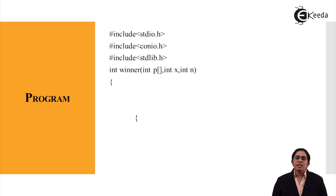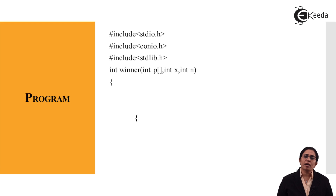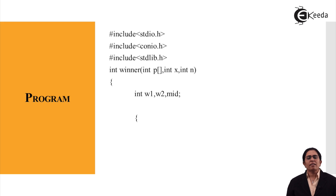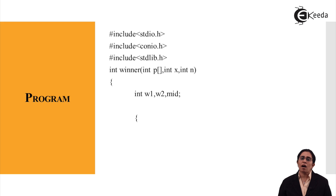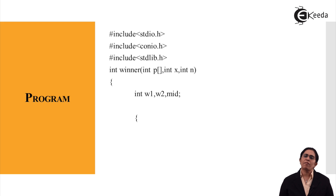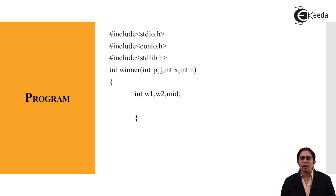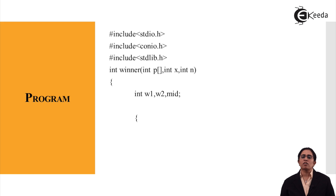The function named 'winner' predicts the winner using the strategy. It takes the array, the integer variable n, and the size on which we are going to find the winner. We declare simple variables: w1, w2, and mid. Since this is a divide and conquer implementation, any divide and conquer problem will have a variable called mid, signifying that we divide the array into two parts by finding the middle. w1 and w2 are two variables that will hold the winners from each subdivided team.